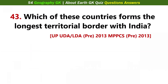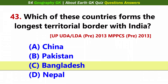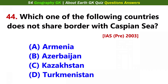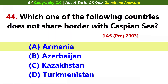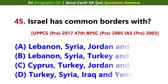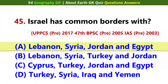Which of these countries forms the longest territorial border with India? Answer C: Bangladesh. Which one of the following countries does not share a border with the Caspian Sea? Answer C: Armenia. Israel has common borders with Lebanon, Syria, Jordan, and Egypt.